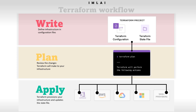The final stage is Apply. Once approval is given, Terraform performs the proposed operations in the correct order, respecting any resource dependencies. For example, if you update the properties of a VPC and change the number of virtual machines in that VPC, Terraform will recreate the VPC and scale the virtual machines accordingly. The overall workflow is: write a configuration file, plan the changes, then apply it to your service provider — whether that's AWS, GCP, Microsoft Azure, Datadog, or one of the thousand-plus available providers.